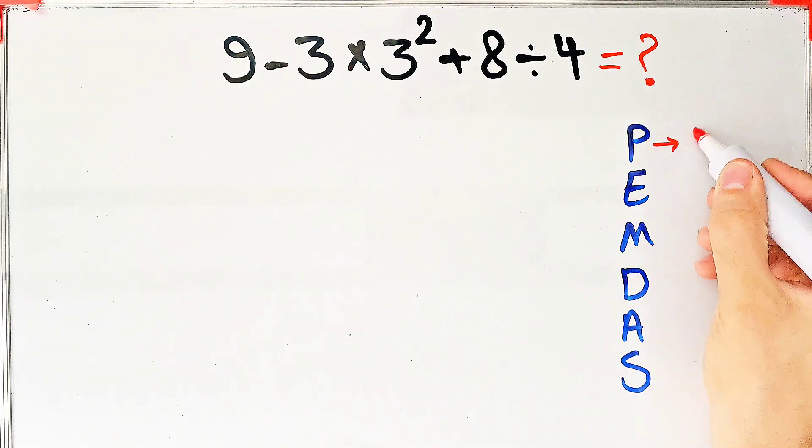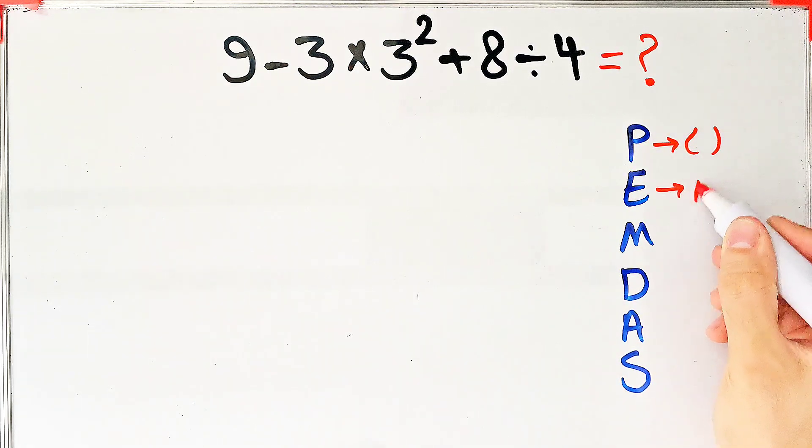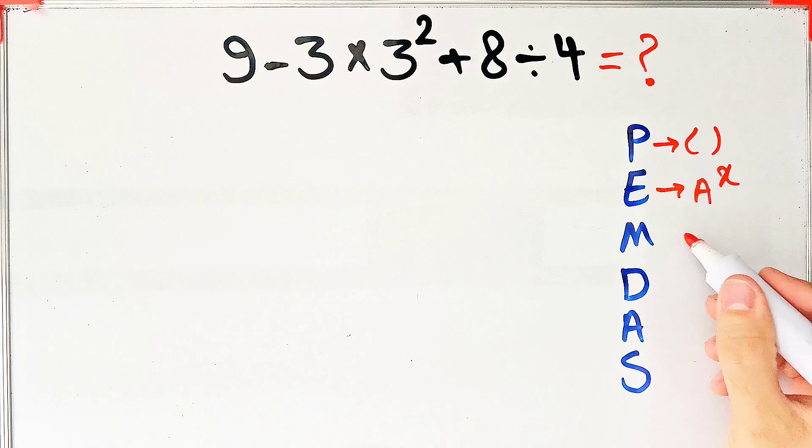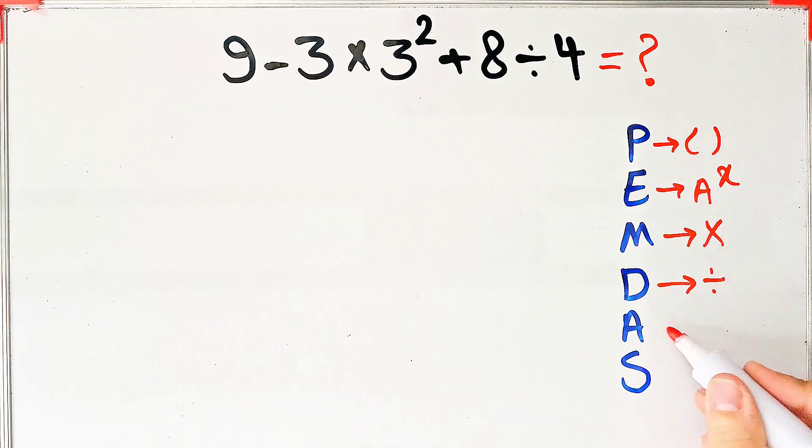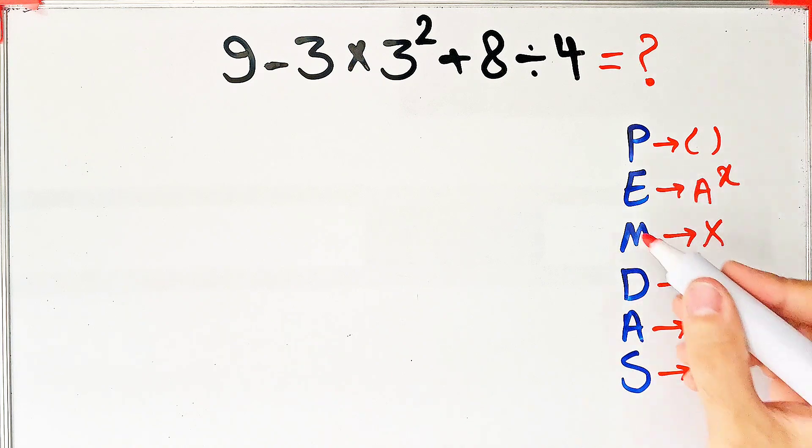In this rule, P stands for parentheses, E stands for exponent, M stands for multiplication, D stands for division, A stands for addition, and S stands for subtraction.